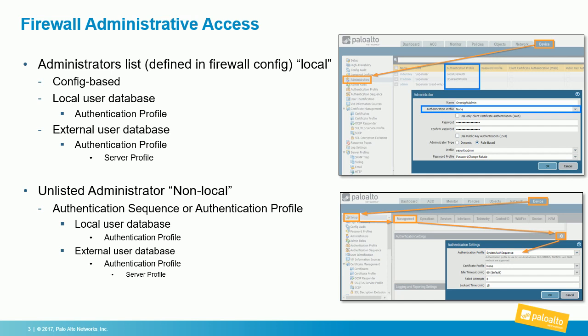To use an unlisted administrator, you create a server profile telling the firewall how to talk to the external server housing admin usernames and passwords, then define which admins can authenticate within an authentication profile. You do not put usernames in the administrators list. Instead, go to Device > Setup > Management, scroll to Authentication Settings, click the gear, and specify either a single authentication profile or multiple profiles ordered in an authentication sequence. Click OK and commit, and your admin should be able to log in.